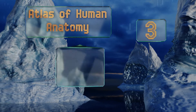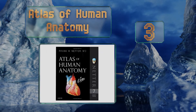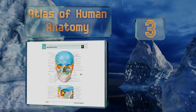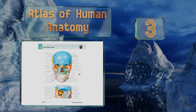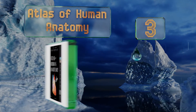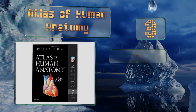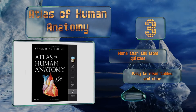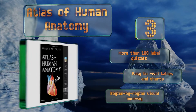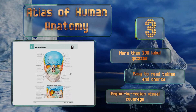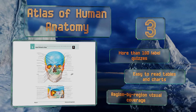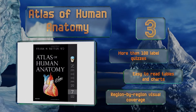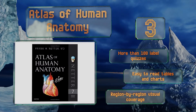Nearing the top of our list at number three, the Atlas of Human Anatomy by Frank H. Netter MD includes student consult interactive ancillaries and guides, making this a fine choice for the medical or nursing resident intent on both learning the material and getting good grades when tested. It features more than 100 label quizzes, easy-to-read tables and charts, and region-by-region visual coverage.